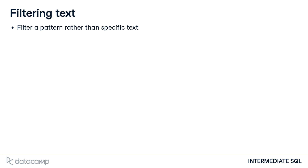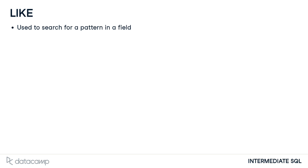We'll be introducing three more SQL keywords into our vocabulary to help us achieve this – LIKE, NOT LIKE, and IN. In SQL, we can use the LIKE operator with the WHERE clause to search for a pattern in a field. We use a wildcard as a placeholder for some other values to accomplish this. There are two wildcards with LIKE – the % and the underscore.